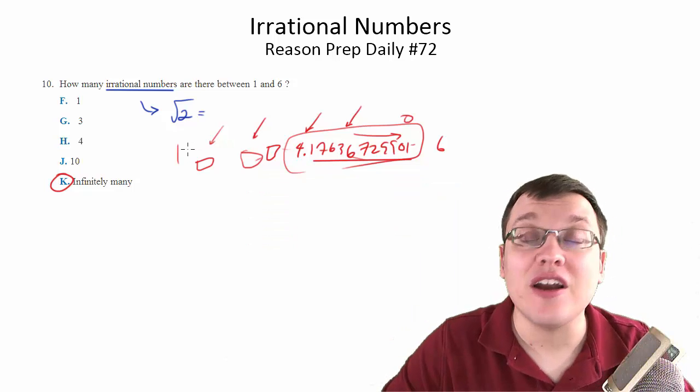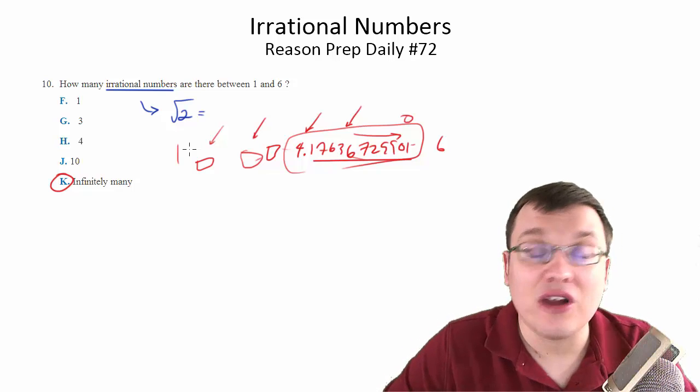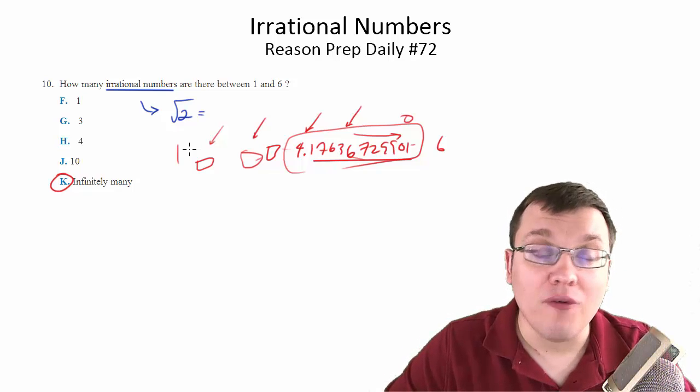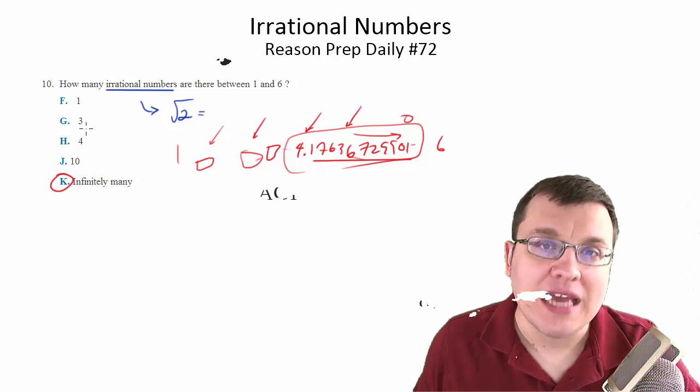The point is that there's an infinite number of irrational numbers between 1 and 6. And in fact, as I said, there's an infinite number of irrational numbers between any two real numbers at all. So that's why the answer to this one is going to be K.